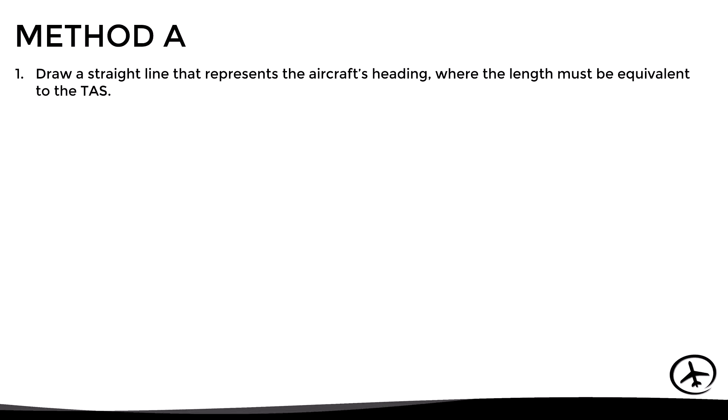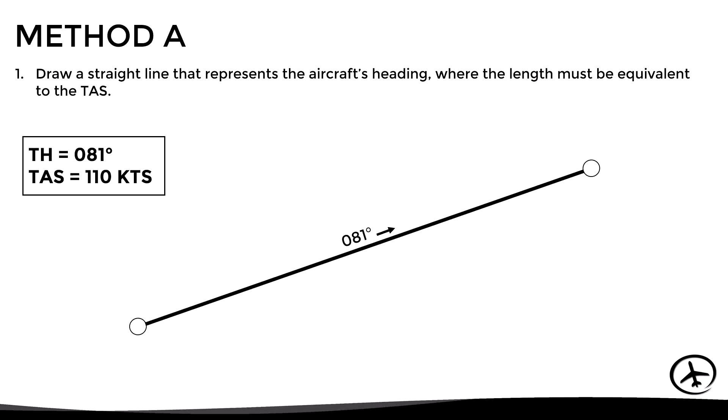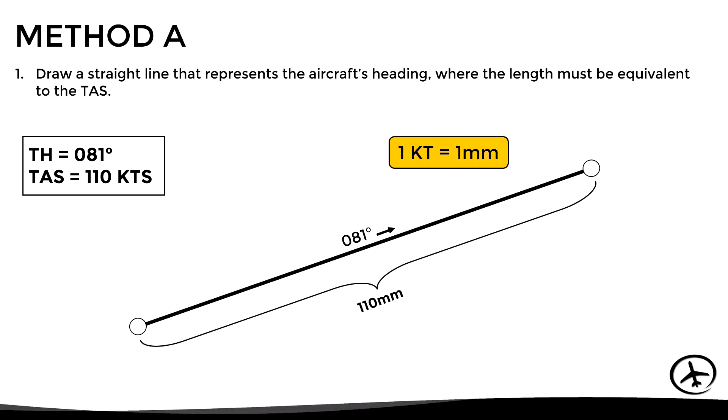With Method A, the first step is to take a piece of paper and draw a straight line that represents the aircraft's heading in relation to true north. The length of this segment must be equivalent to the true airspeed. For example, if the true heading is 081 and the true airspeed is 110 knots, we draw a line representing heading 081. Using a scale of 1 knot equal to 1 millimeter, the length of this segment should be 110 millimeters.